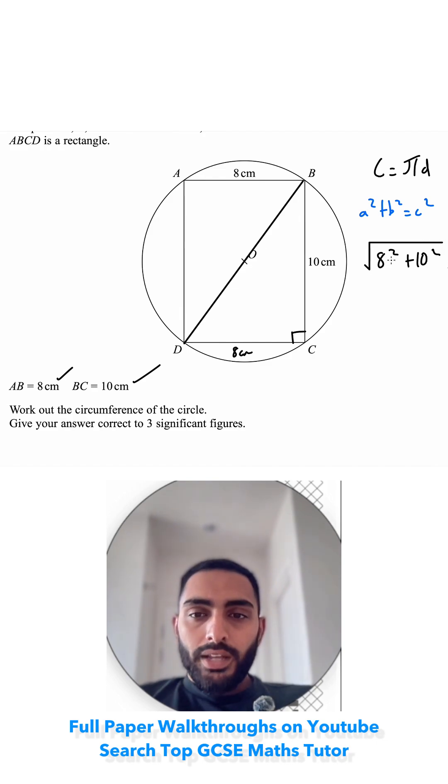8 squared is 64 and 10 squared is 100, so I'm doing the square root of 164. I'm just going to keep it like that for now. It's better to use this than write it in decimals because I want to use my exact value. Now that I know my diameter, I know d, I can substitute it into this equation and I can find my circumference.